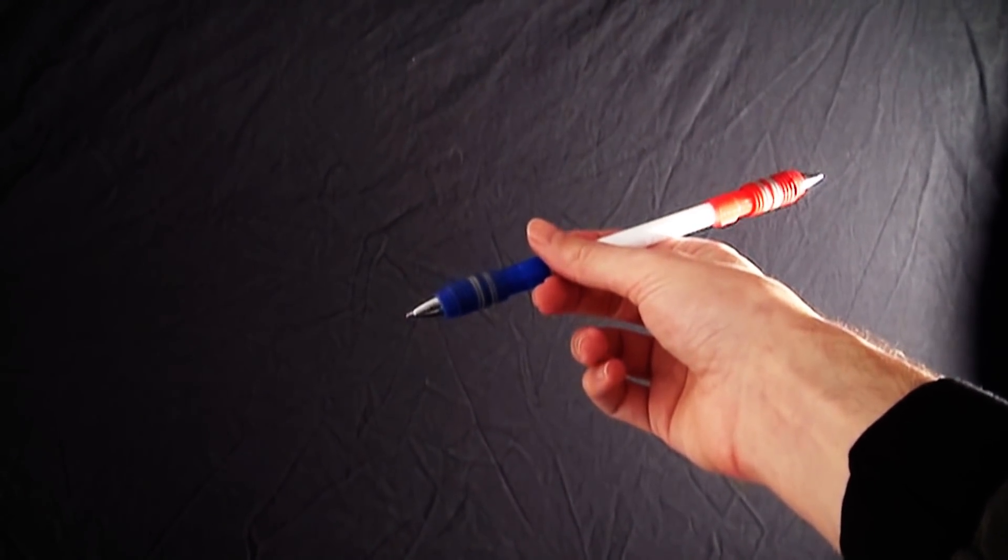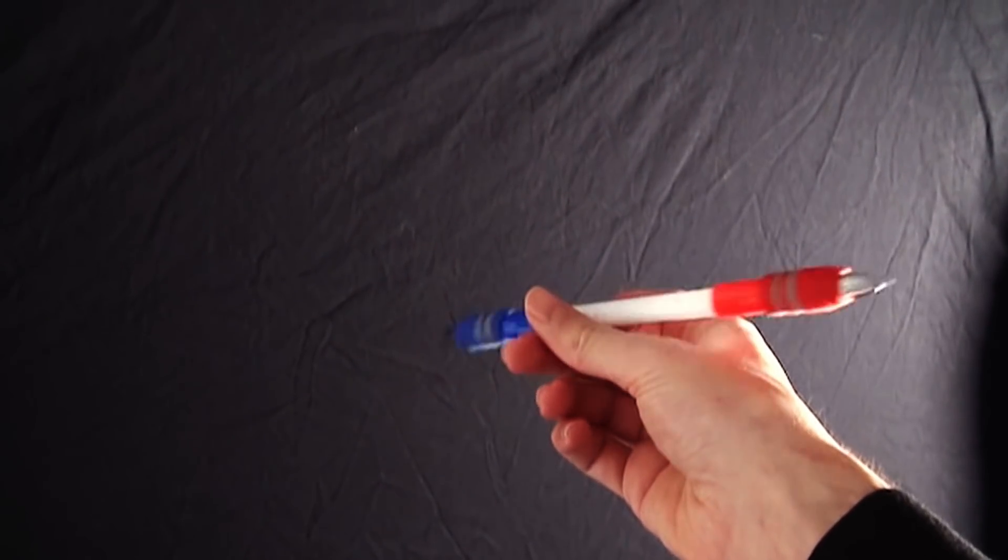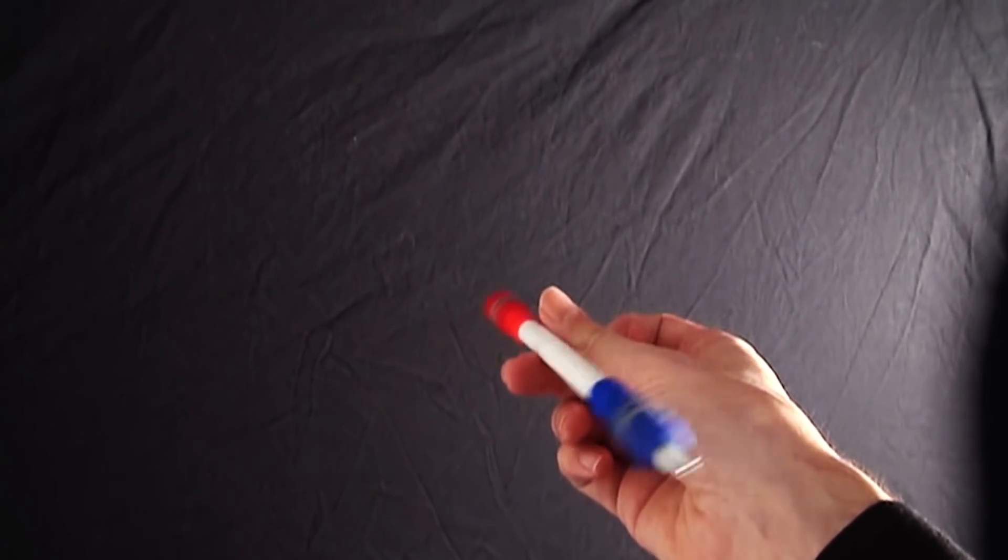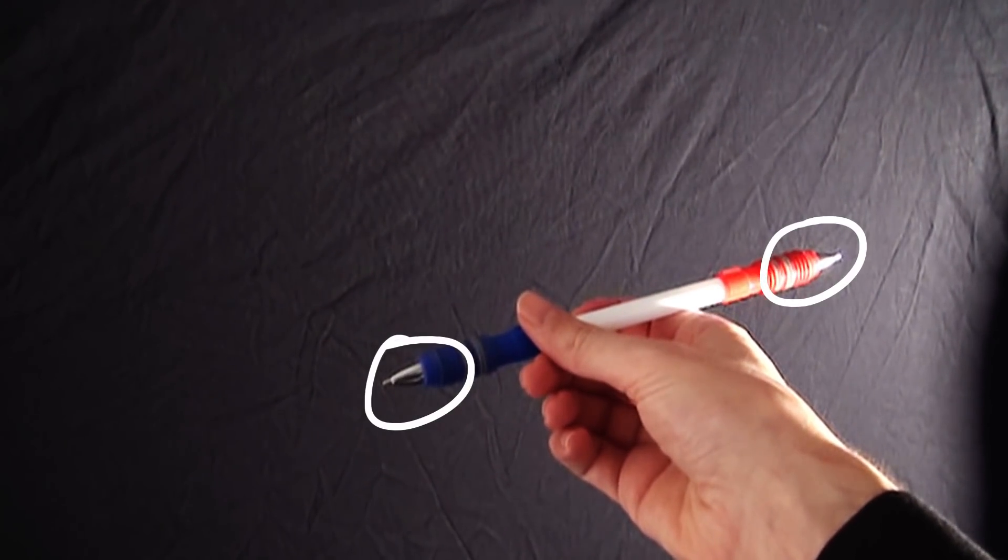Also the heavier the pen is, the easier it is. With a very light pencil it's also easy, but not as easy. So just put some heavier caps on both sides of a pen, like I modded this one here, and then it's perfect.